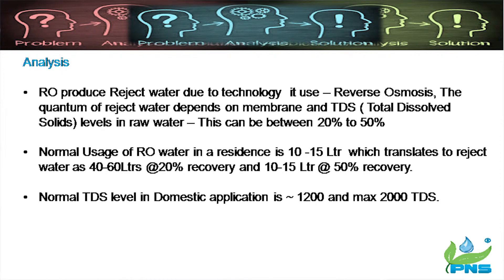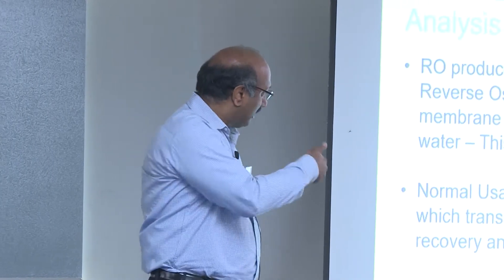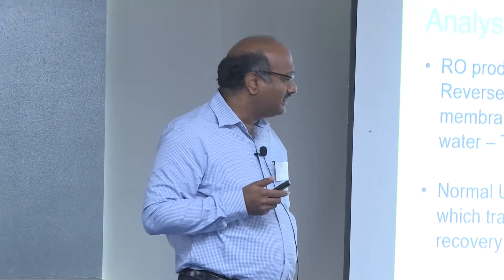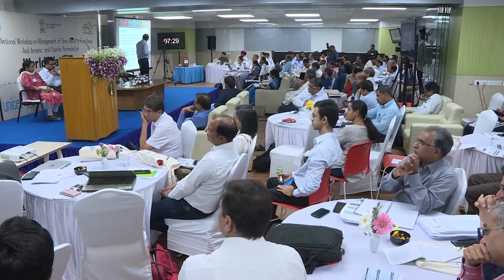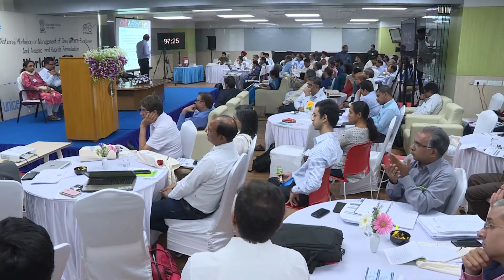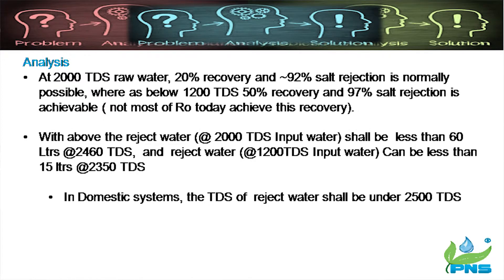RO produces reject water due to its technology. The quantity of reject water depends on the membrane and the TDS of the raw water — it can be between 20 to 50 percent. Normal water use in residences is 10 to 15 liters. We translate the reject water as 40 to 60 liters at 20 percent rejection, and 10 to 15 liters at 50 percent recovery. At 1200 to 2000 TDS in domestic applications, we expect 20 percent recovery with 92 percent salt rejection, and at 1200 TDS, 50 percent recovery with 97 percent salt rejection.